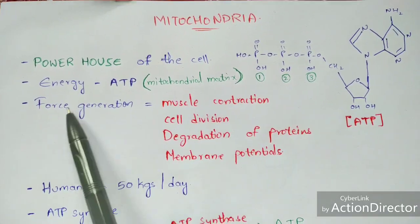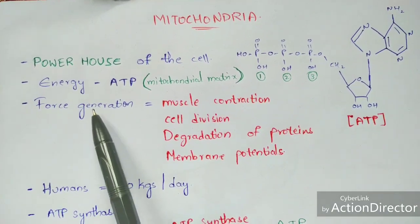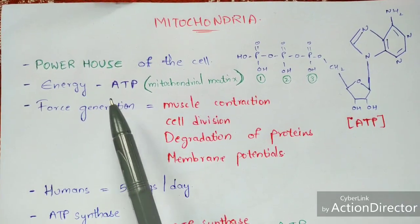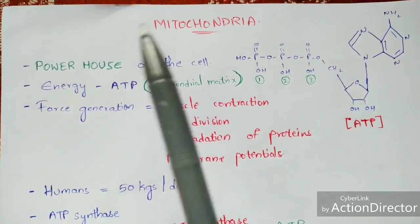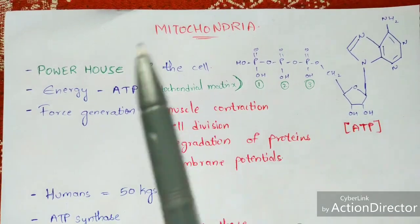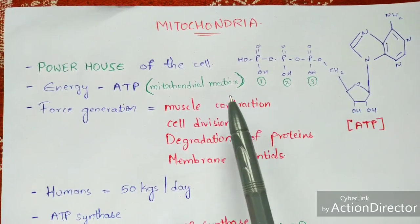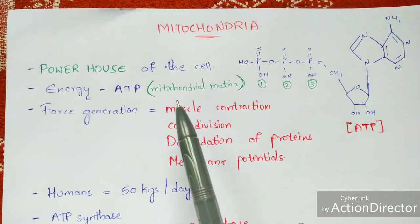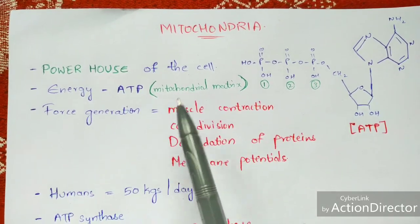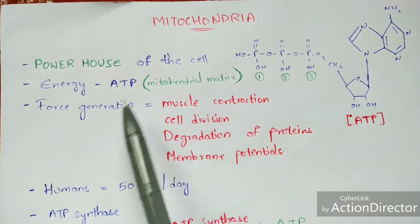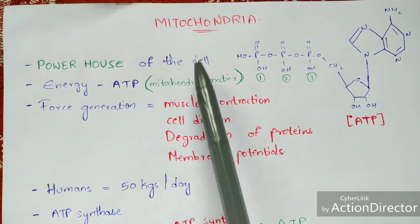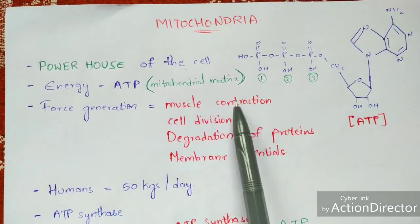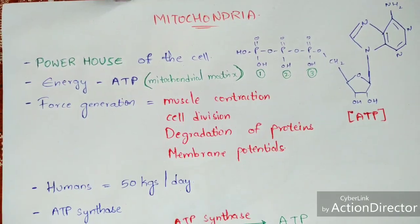Force generation is nothing but the ability to do work. Work is nothing but muscle contraction — like walking or running — and muscle contraction requires some amount of energy. That energy is produced in the form of ATP by the mitochondrial matrix in the mitochondria.